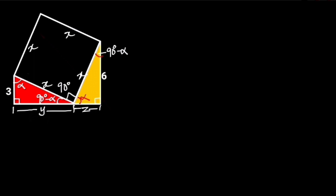Now, notice that the corresponding angles of these two triangles are equal. So we can say that the two triangles are similar, and the proportionality of their corresponding sides is: 6 over y is equal to z over 3.